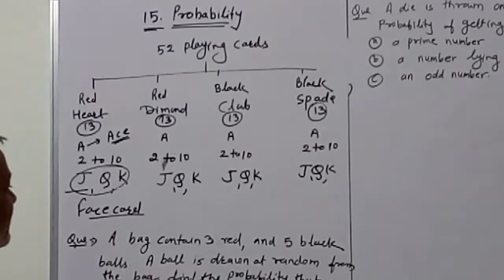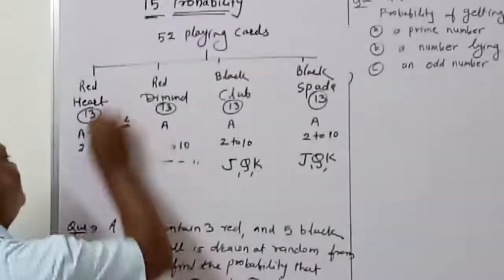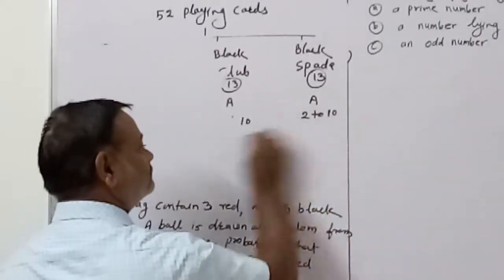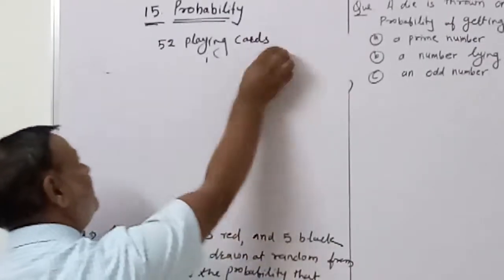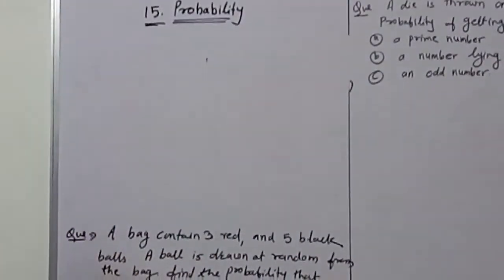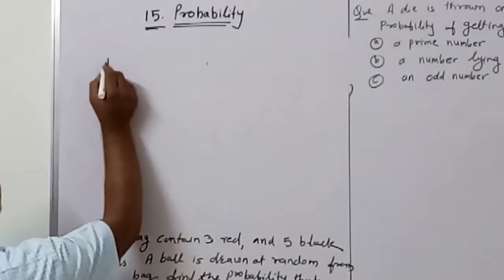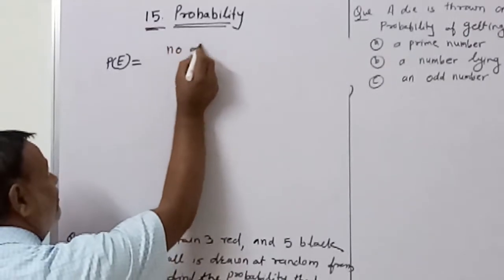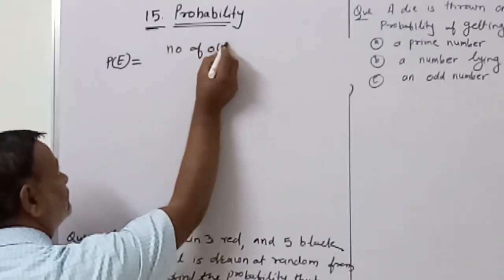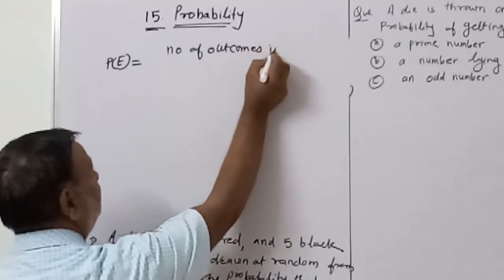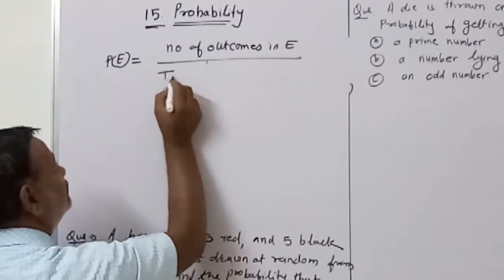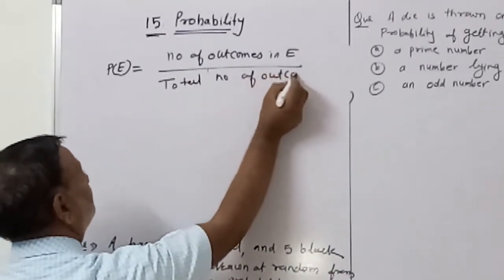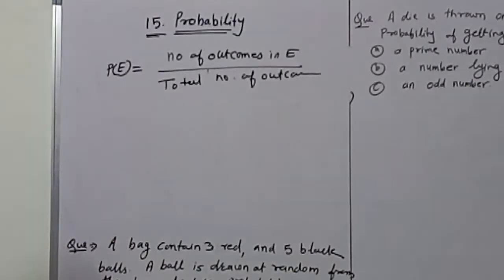Before solving examples, let me explain one more thing. The probability formula: P(E) - probability of an event E - is equal to the number of outcomes in event E divided by the total number of outcomes. This is the formula for probability.